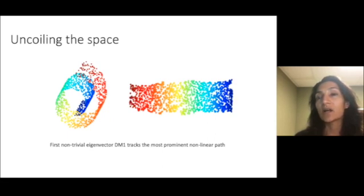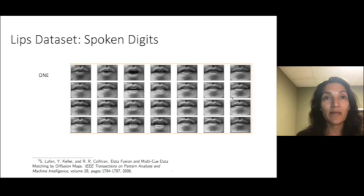So transitioning all the way over there would take usually many steps in low probabilities. And the first non-trivial eigenvector would track the most dominant nonlinear path through the data. Here's an example from another paper on diffusion maps.